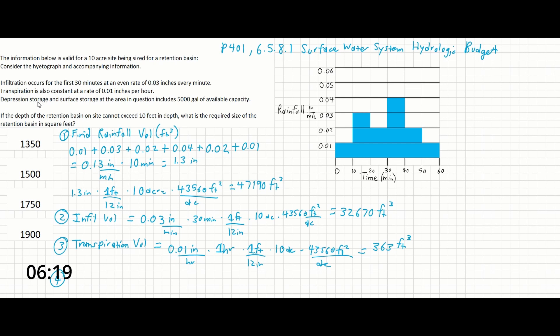And finally we have our depression storage. Sorry for how sloppy that is. And that's 5,000 gallons times another unit conversion of 1 foot cubed over 7.48 gallons. And that's going to be equal to just about 668 cubic feet.